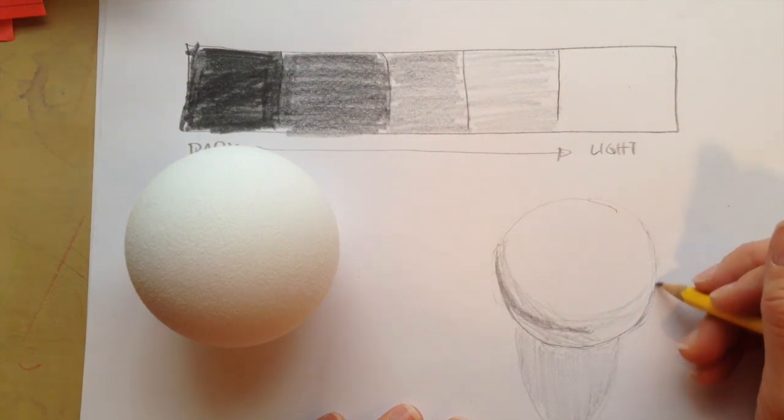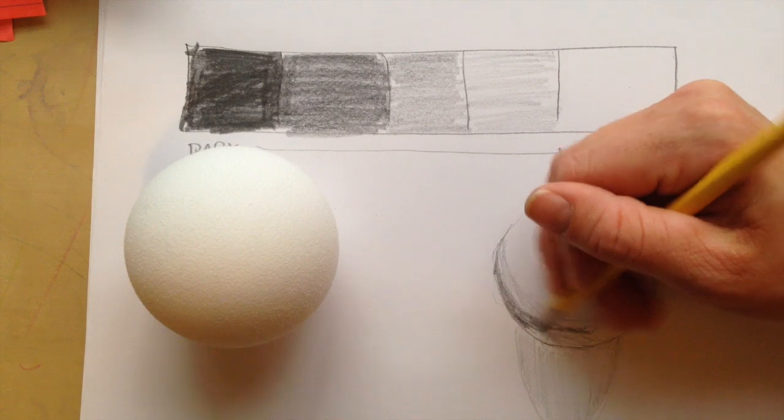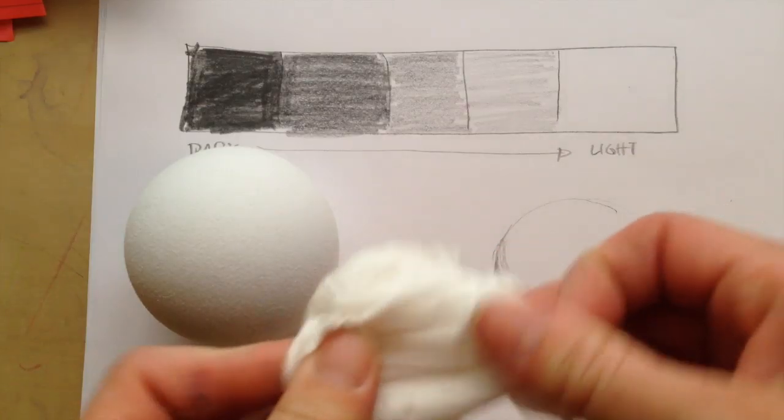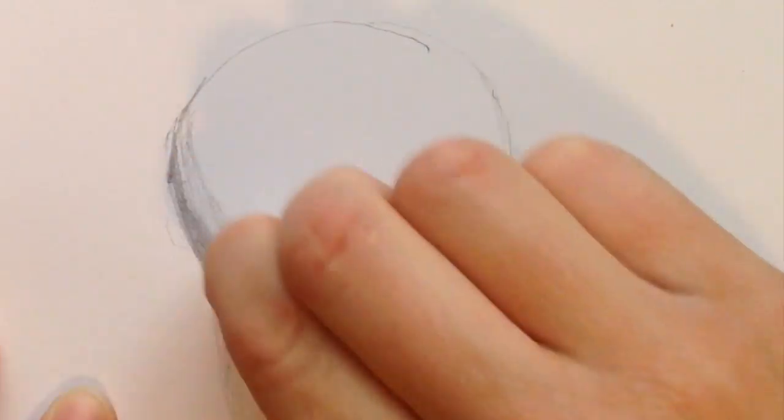If you can't see your outline anymore, you might just want to drop it back in. Here comes the trick: grab a tissue or toilet paper, or if you have fancy blender stumps. I just want to make sure I've got these shadows where I want them to be. You can either use your blender stump, toilet paper, tissue—roll it up—and you blend it together.